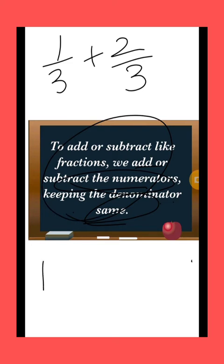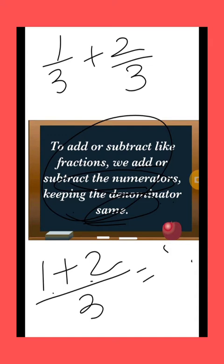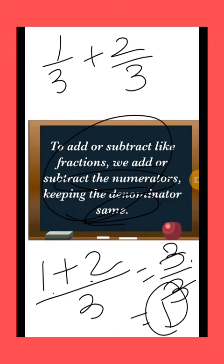So according to this, first of all we will add the numerators — 1 plus 2 — keeping the denominator same, that is 3. 1 plus 2 is equal to 3 by 3. And now we can simplify it: 3 ones are 3, so dividing we get the answer 1.